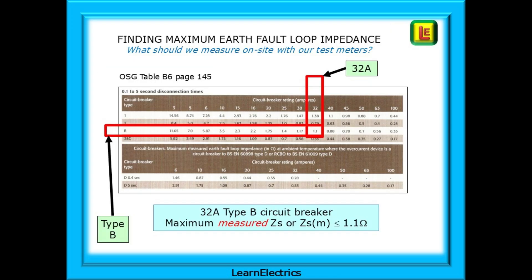The ZS value for different protective devices can be obtained from the On-Site Guide, Table B6 on page 145. For our example, find Type B on the left-hand side horizontal row, and the 32-amp vertical column along the top - where the row and column cross is our answer. ZS measured should not exceed 1.1 ohms. This maximum measured value has already been adjusted in the table for a C-min of 0.95 and a temperature adjustment of 80%, so there is nothing further for you to do to this 1.1 ohms.